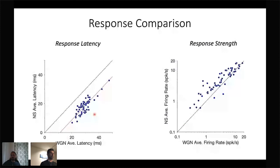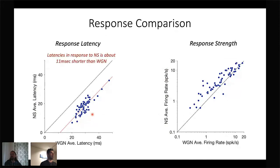Looking at the whole population of V1 cells, we plotted response latency to natural scenes against response latency to white Gaussian noise, and similarly for firing rates. For response latency, all cells responded with a shorter latency to natural scenes — on average about 11 milliseconds shorter than to white Gaussian noise. And most V1 cells responded with a higher spike rate to natural scenes than to white Gaussian noise.